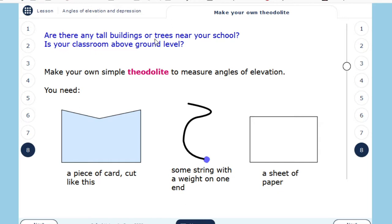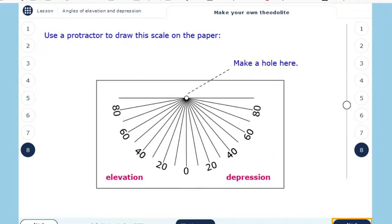Are there any tall buildings or trees near your school? Is your classroom above ground level? Make your own theodolite to measure angles of elevation and depression. You just need to use a piece of card cut like this, some string with a weight on one end, and a sheet of paper.